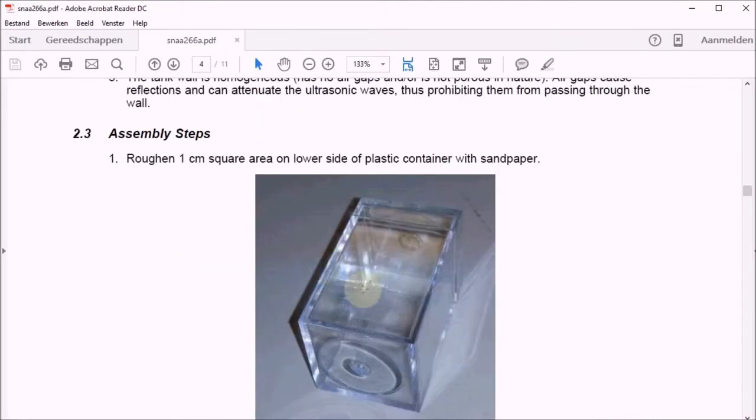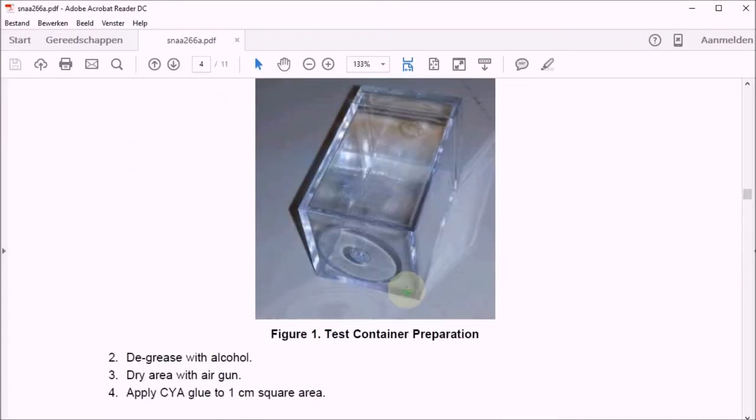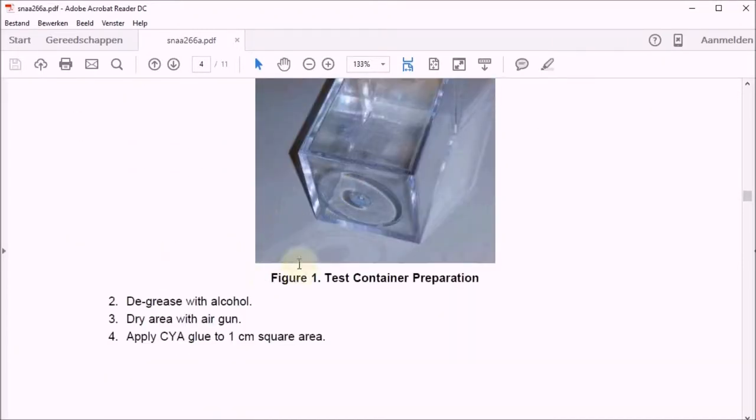So the first thing we need is to take the container and roughen it with sandpaper. And you can see that my container that I was showing just a few seconds ago looks very close to this one. So I really have a similar item. Then you have to degrease it with alcohol.